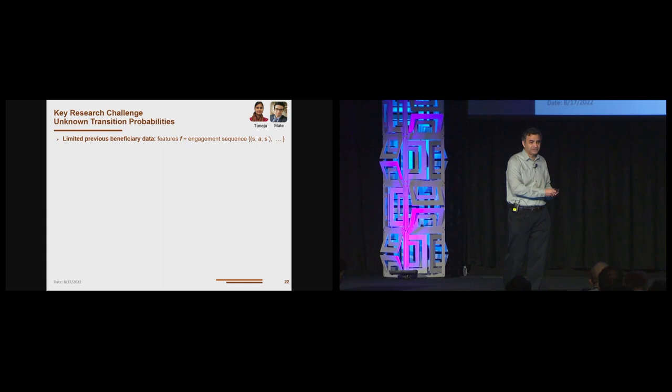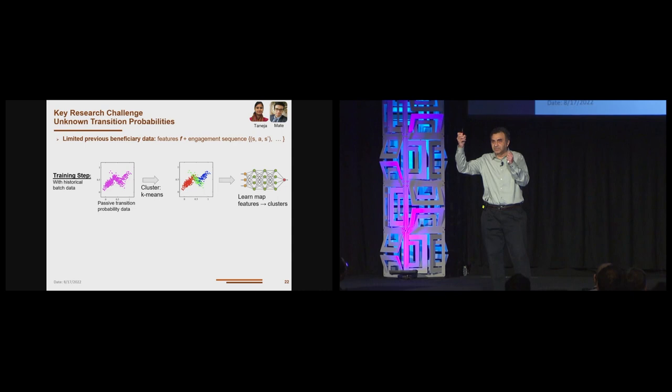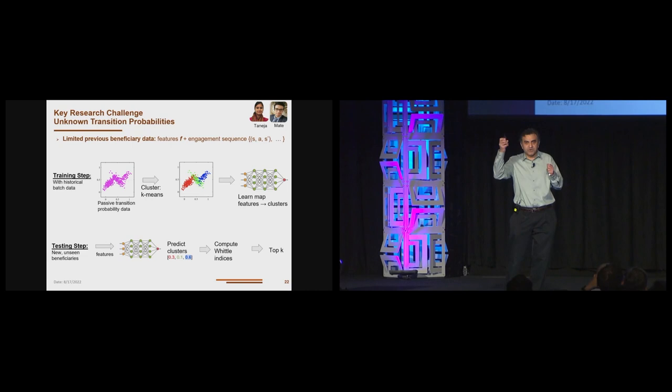Very fortunately, we had worked on this similar problem earlier, and there's an algorithm we developed by Chen et al at AMAS 2016 that we could use for this problem and choose the top K mothers. But we also need to prove indexability. Are we ready to now deploy the system? Not yet. One big problem is that the transition probabilities of these mothers themselves are not known. So how do we infer them? Fortunately, we have limited previous beneficiary data. We have for each mother features - age, income, education level, et cetera, an engagement sequence. Using this, we can compute transition probabilities and then cluster these passive transition probabilities and now learn a map from the beneficiary features to the cluster centers.